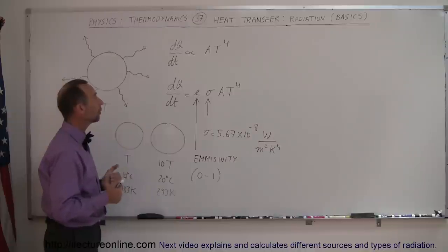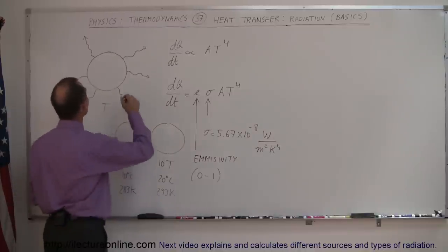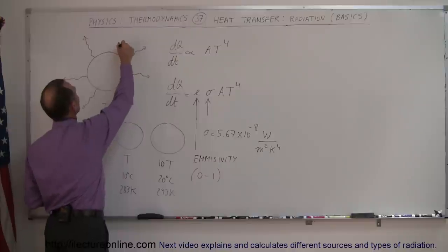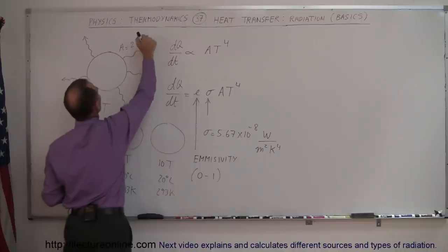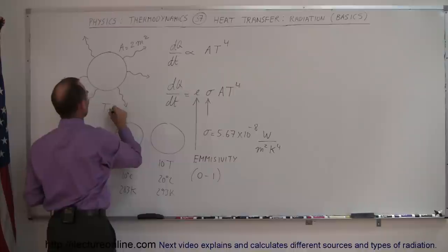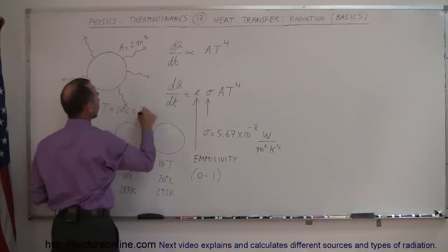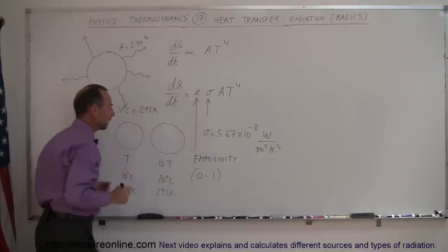Alright, knowing all that, let's now take a look at an example. Let's say that we have an object here where the surface area is equal to 2 meters squared. And let's say that the temperature of this object is equal to, let's say, 20 degrees centigrade, which is equal to 293 Kelvin.